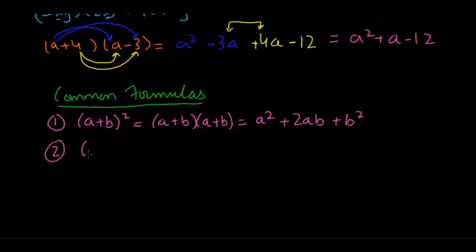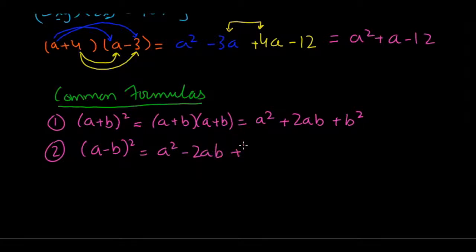Similarly, if you have (a - b) squared, you get the same thing except the middle term now has a negative sign: a squared minus 2ab plus b squared.